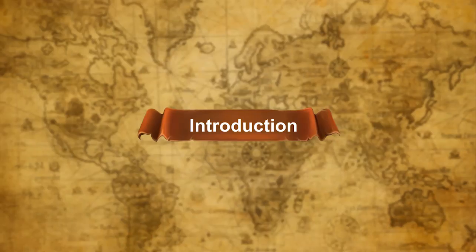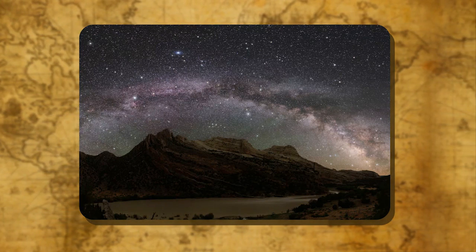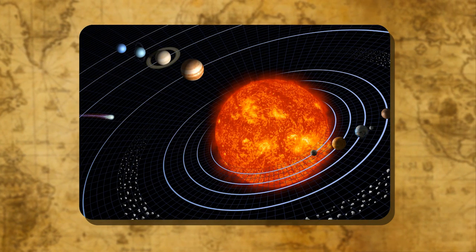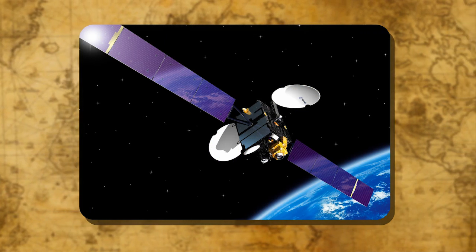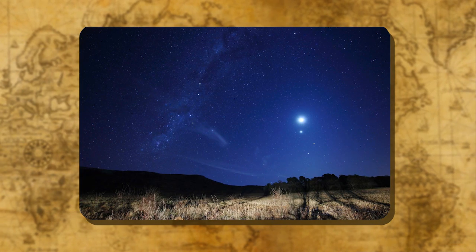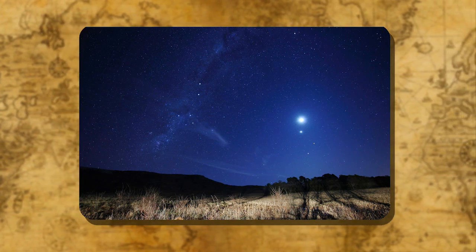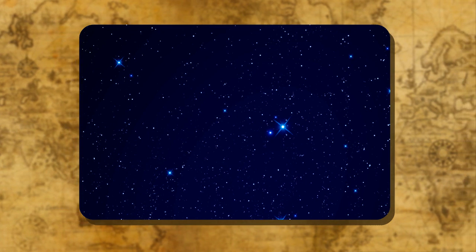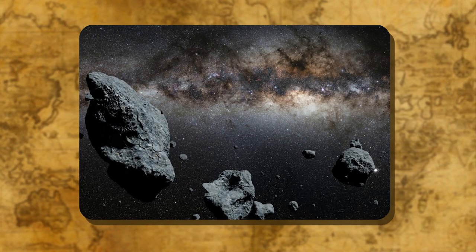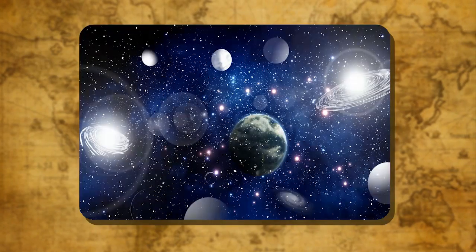Planet Earth in the solar system: introduction. Since ancient times, humans have looked up at the shining objects in the sky and wondered about them. Today we know a lot about these heavenly or celestial bodies and about the universe, with the help of instruments like the telescope and artificial satellites. The sun, the moon, and all those objects shining in the night sky are called celestial bodies. Some of the main heavenly bodies in the universe are stars, planets, satellites, asteroids, comets, etc. Our very own Earth is also a part of this universe.